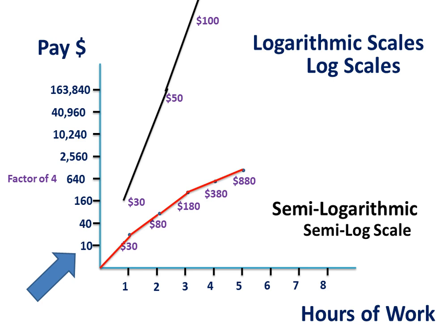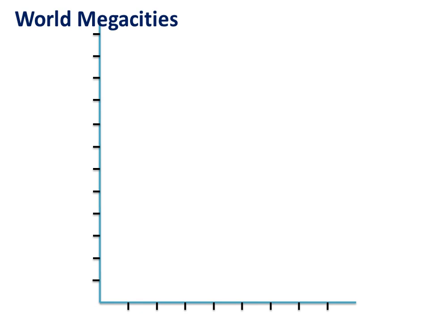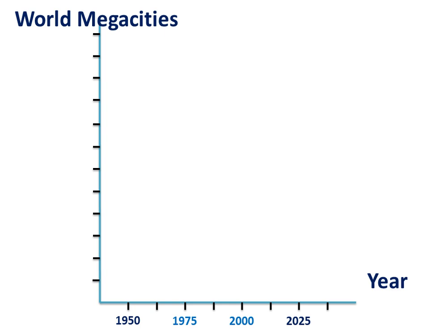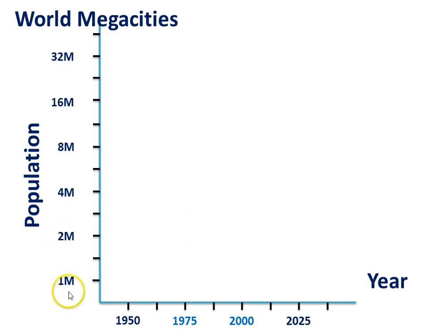In geography you won't often come up against a full logarithmic scale, but it's important that you understand the difference. To make our point further, we're going to look at some real geography data in relation to world megacities — a megacity being a city with more than 10 million people. The data is from the United Nations World Urbanization Prospectus 2014, using a linear scale along the bottom going up in increments of 25 years, and a logarithmic scale along the population axis starting at 1 million, then 2 million, 4 million, 8 million, 16 million, and 32 million — going up by a factor of 2 each time.